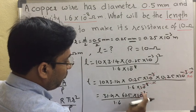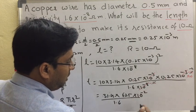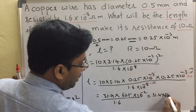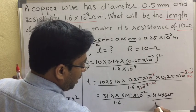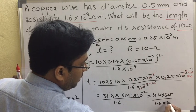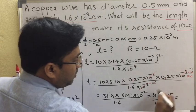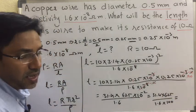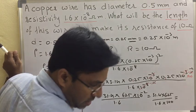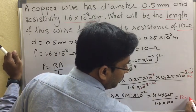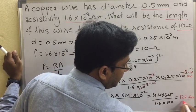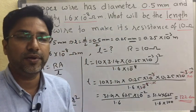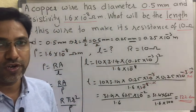Multiplying the upper terms and dividing by the lower terms, the final answer comes out to 122.6 meters. So in this way you can solve resistivity problems.